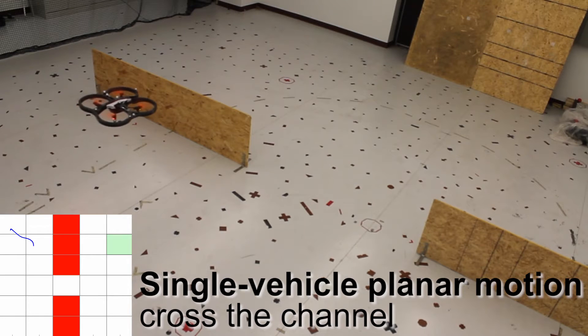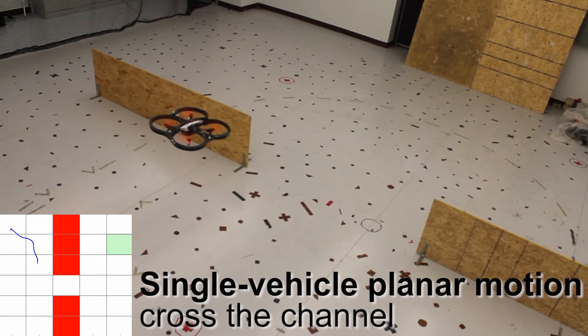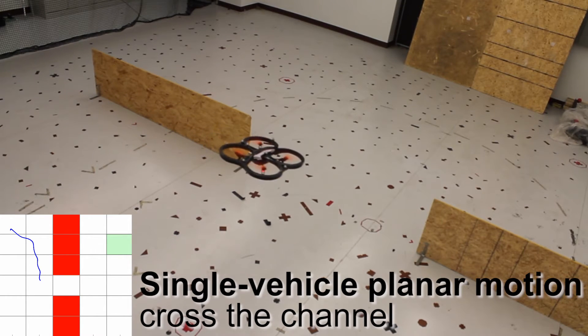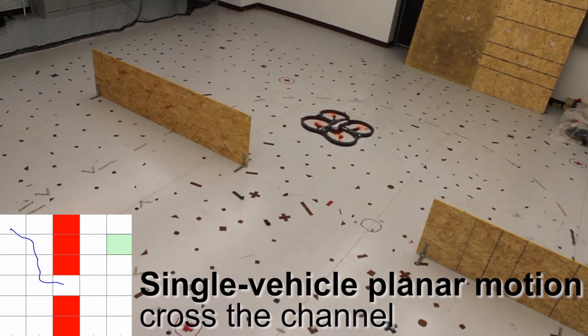We demonstrate a hybrid control framework for safe and robust motion planning. At the high level, predefined motion primitives are concatenated over a gridded workspace, and at the low level, motion primitives are implemented by feedback controllers.